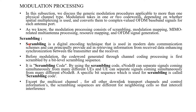First: Scrambling. Scrambling is a digital encoding technique used in modern data communication schemes that can principally provide aid in retrieving information from received data and enhancing synchronization between the transmitter and the receiver. Before modulation, the codeword generated through the channel coding processing is first scrambled by a bit-level scrambling sequence.